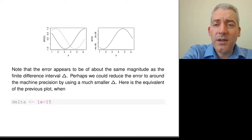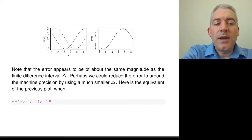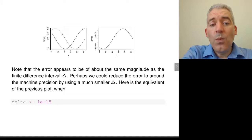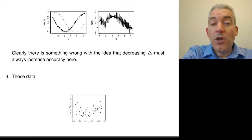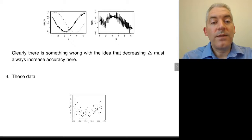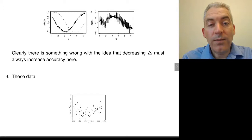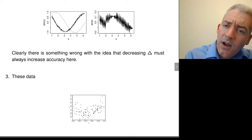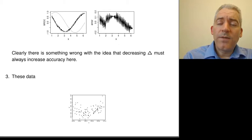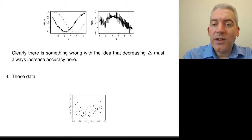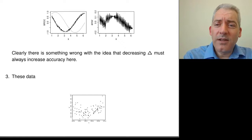So then you might think: if I make my finite difference interval even smaller, I'll get an even smaller error. But if we instead use a finite difference interval of 10 to the minus 15, what happens is not good. Our numerical derivative really doesn't look so great, and the error is much, much bigger than when we used 10 to the minus 5. Making our finite difference interval smaller has made our error not only not better, but actually much, much worse. It was much better to use 10 to the minus 5 than 10 to the minus 15.